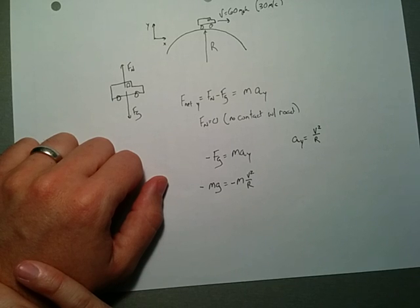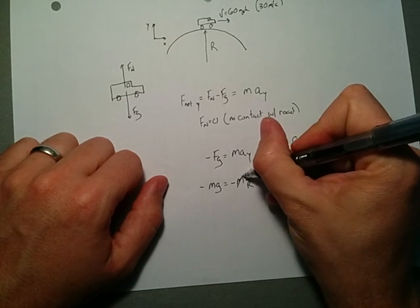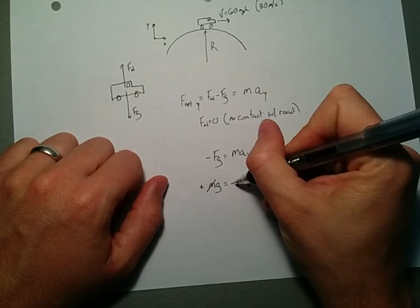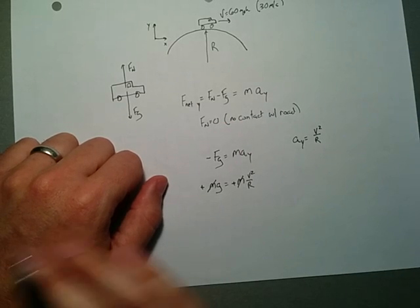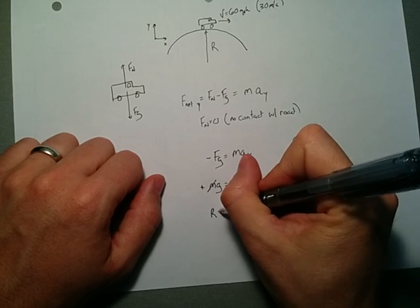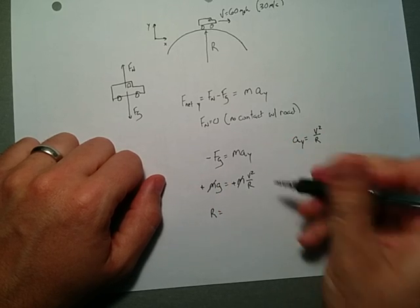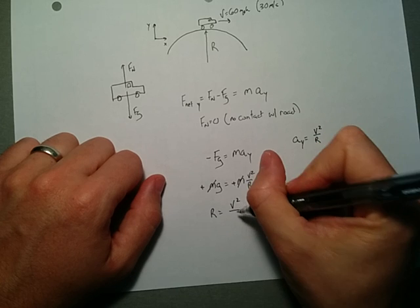And we can do what we normally can do, which is cross out the m's. We'll make those negatives positives. And to find the radius, we'll just move the r over there and the g over here and just get r is equal to v squared over g.